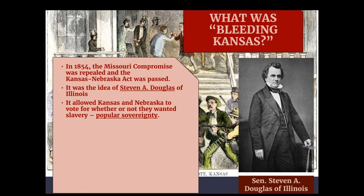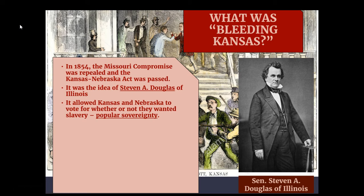Under the Compromise of 1850, popular sovereignty was allowed in New Mexico Territory and Utah Territory. Under the Kansas-Nebraska Act, it was being extended to Kansas and Nebraska Territory. Rather than deciding these lands would be slave or free, they were leaving it up to the people who moved into those territories to vote. It sounds great on paper, but it also had the effect of continuing to kick the can down the road.